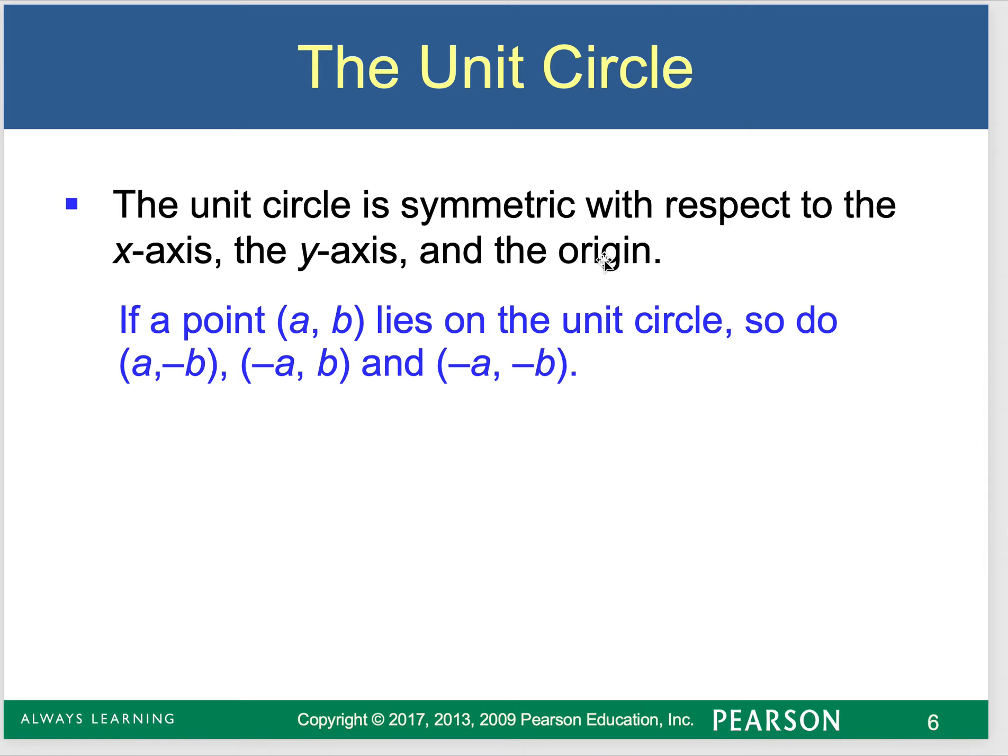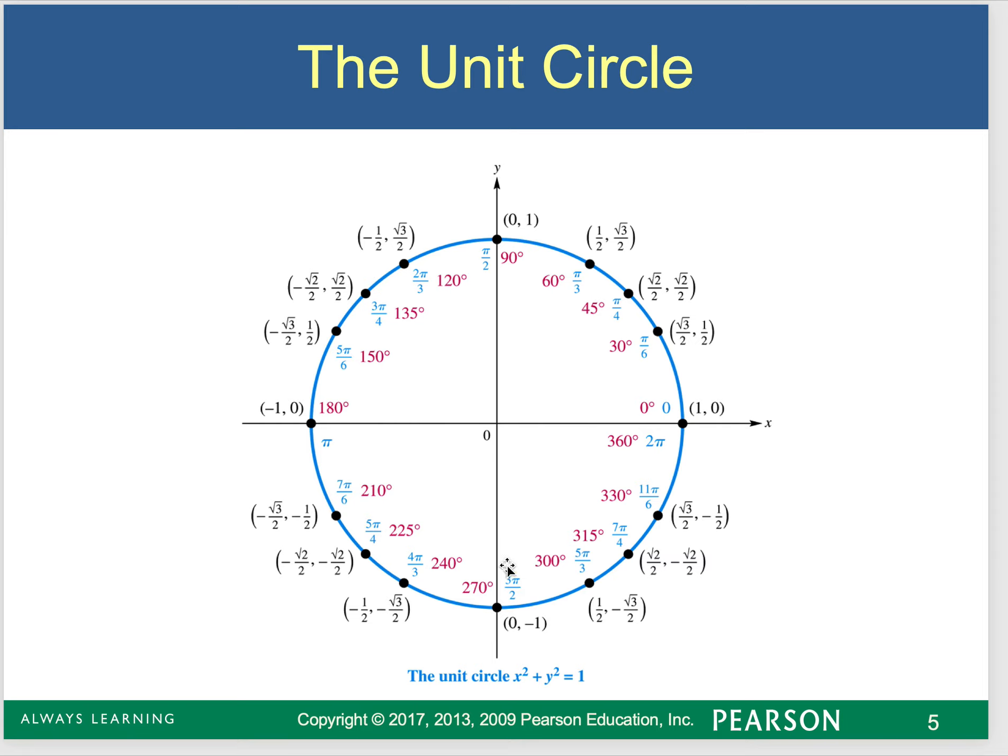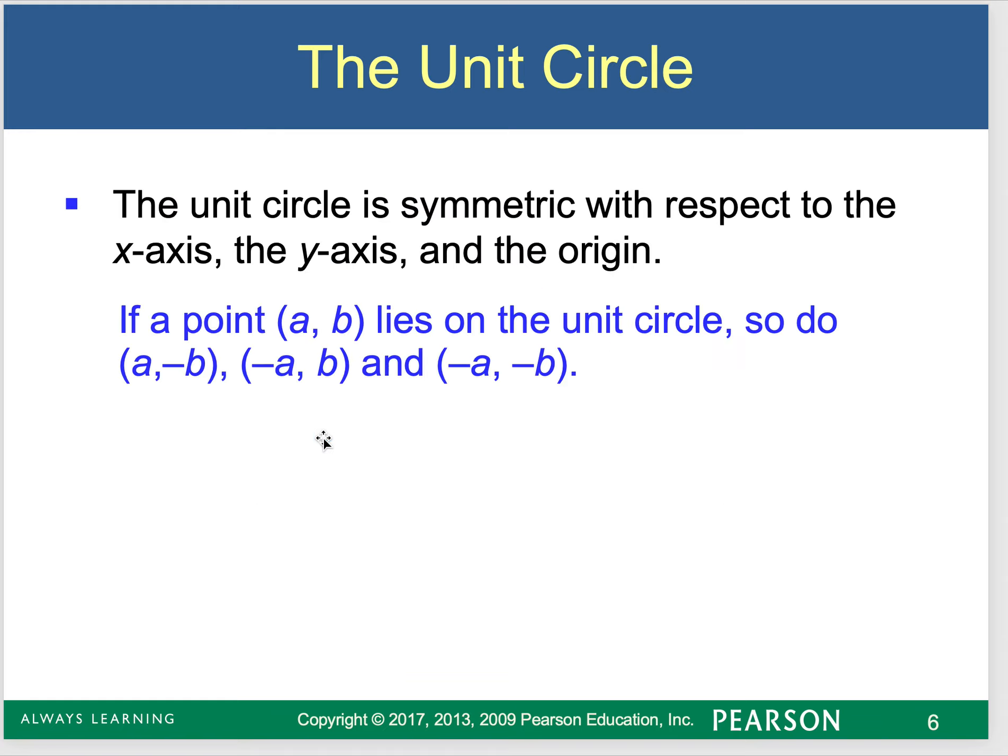The unit circle is of course symmetric. Look at the circle. If I divide it in half this way, it's symmetric. If I divide it in half this way, it's symmetric. That happens because it's centered at the origin, and it has a nice even radius of 1.